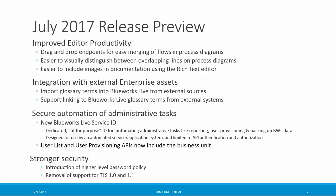In this release of BlueWorks Live, we've enhanced editor productivity, provided additional support for enterprise integration, introduced the BlueWorks Live service ID, and strengthened BlueWorks Live security. Editors can now merge flows in their process diagrams by simply dragging and dropping endpoints. Overlapping lines are now clearly distinguishable within process diagrams, and images can quickly be inserted into rich text documentation. Glossary values can be imported in bulk from external sources via CSV file, and links to glossary terms are readily available. We're introducing the new BlueWorks Live service ID that provides a fit-for-purpose ID for automating, reporting, and user provisioning tasks.